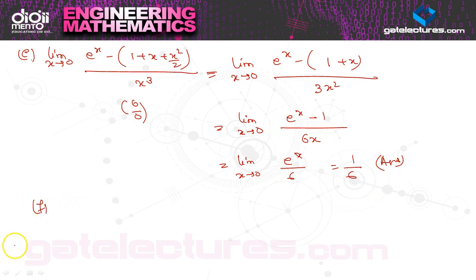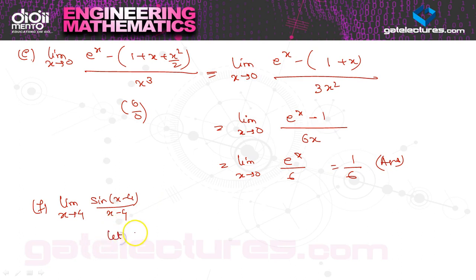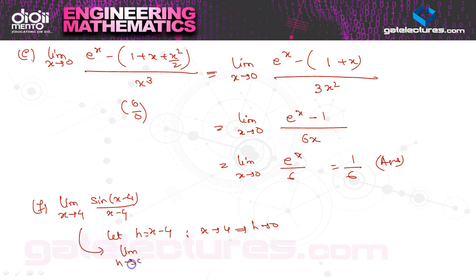Example (f): limit x→4, sin(x−4) / (x−4). Let h = x−4, so as x→4, h→0. The limit becomes limit h→0, sin h / h, and we know this equals 1. So the answer is 1.